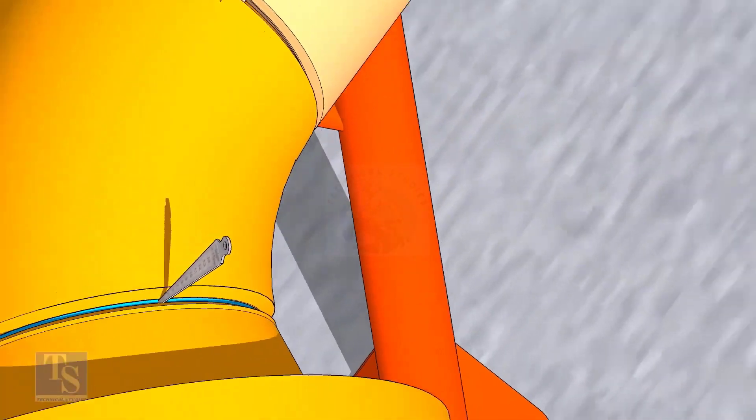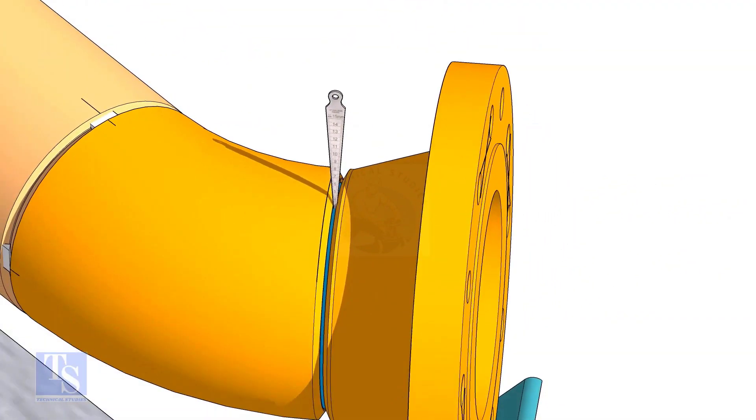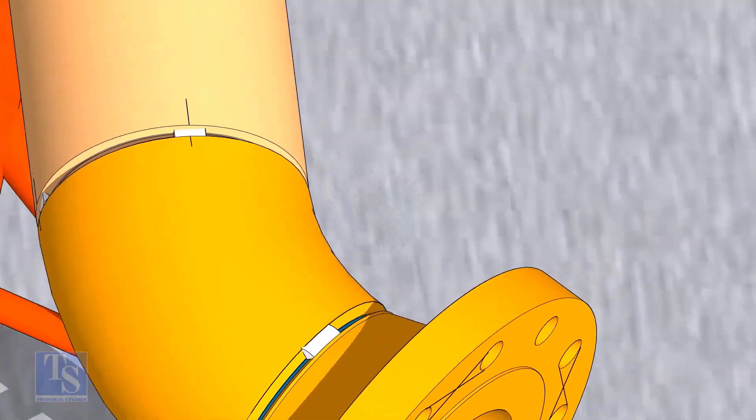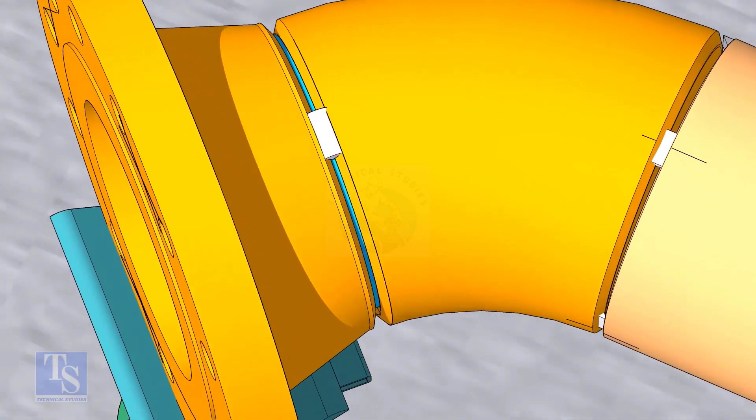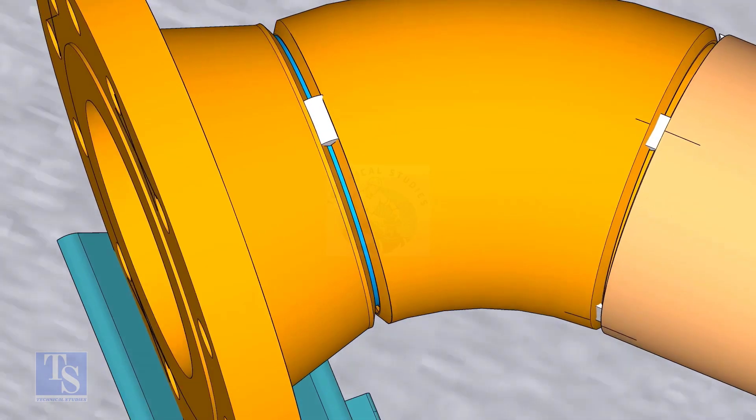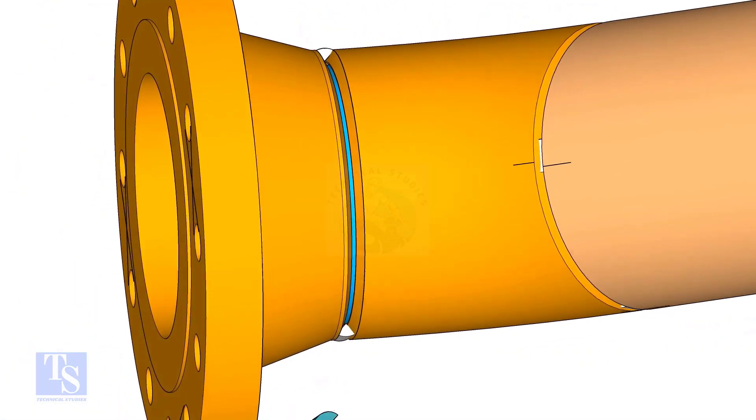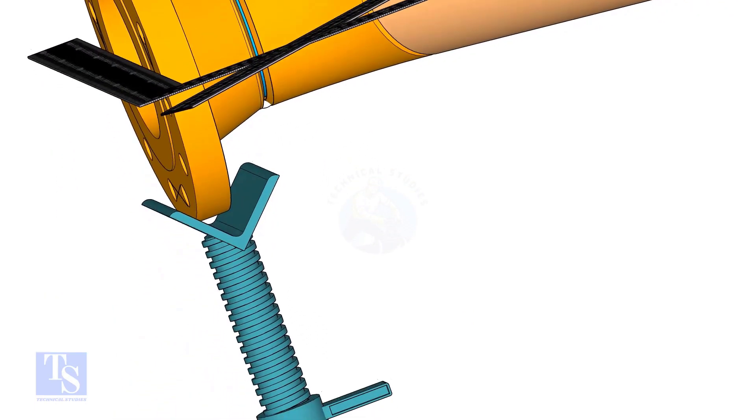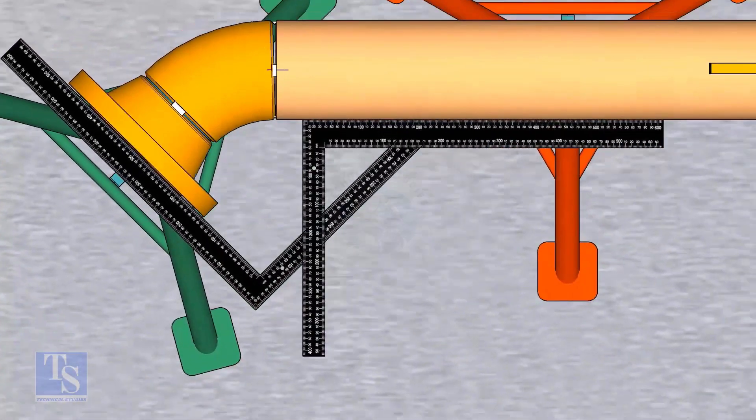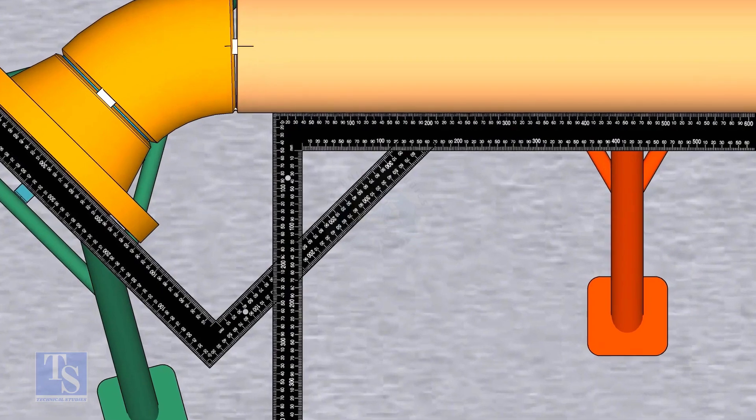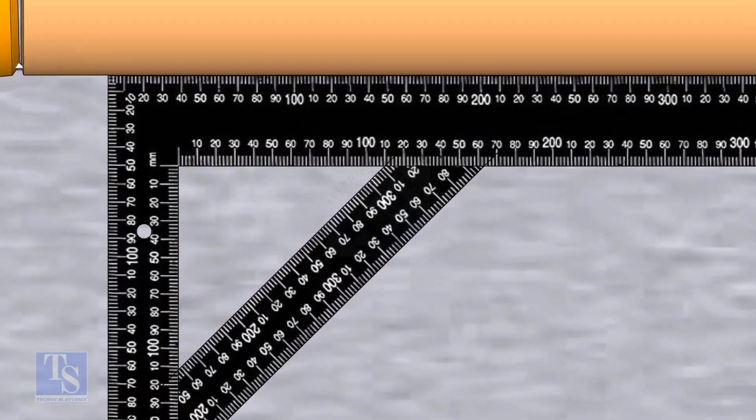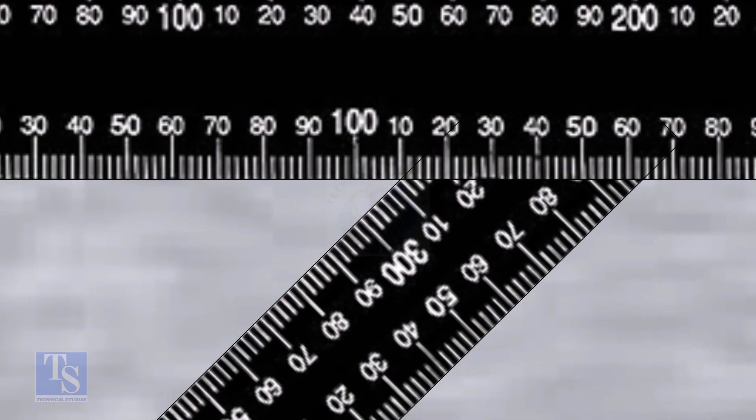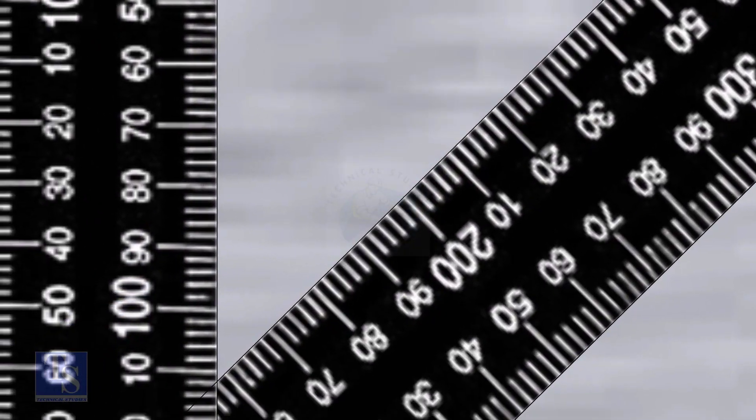Tack weld on the top and bottom sides of the joint. Check the degree of the flange face to the pipe. Tack weld on both sides of the joint.